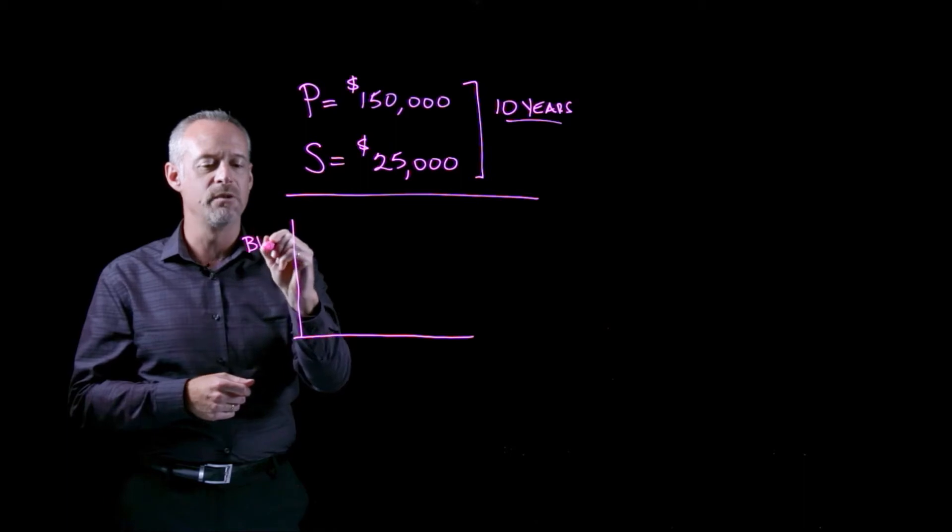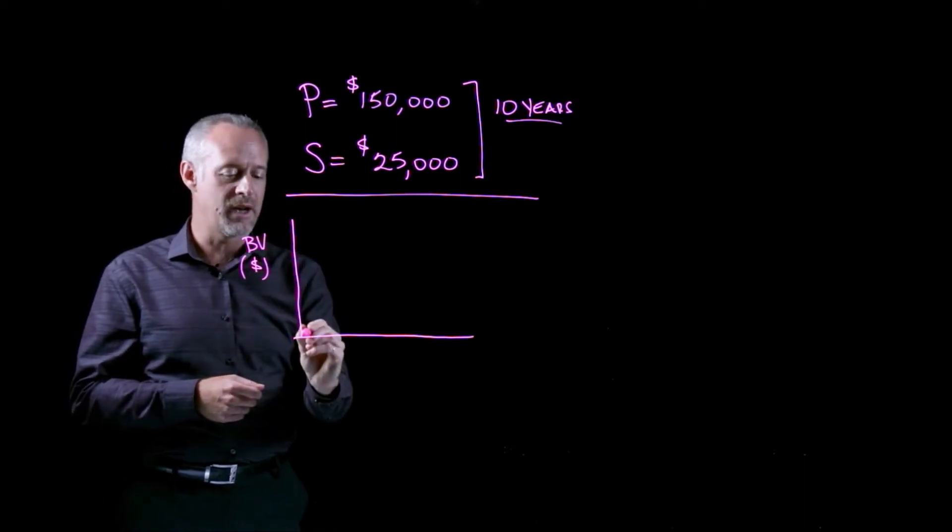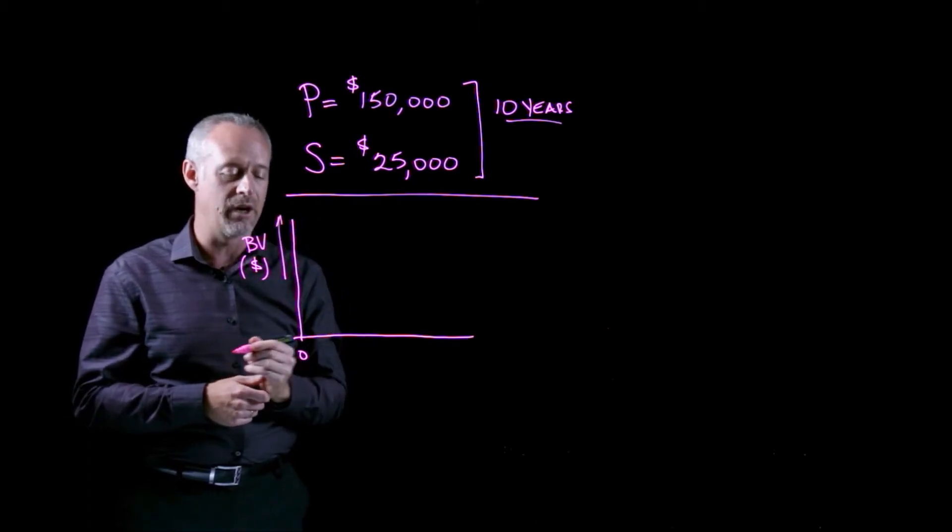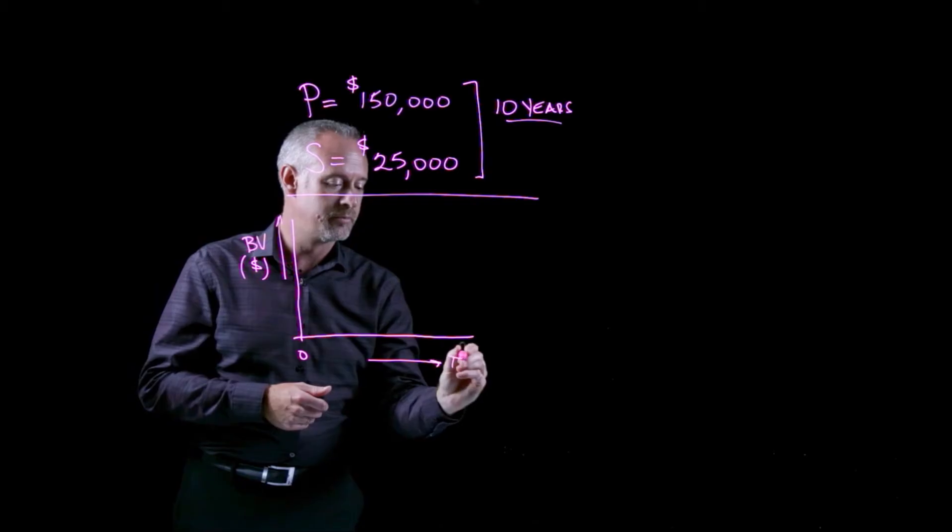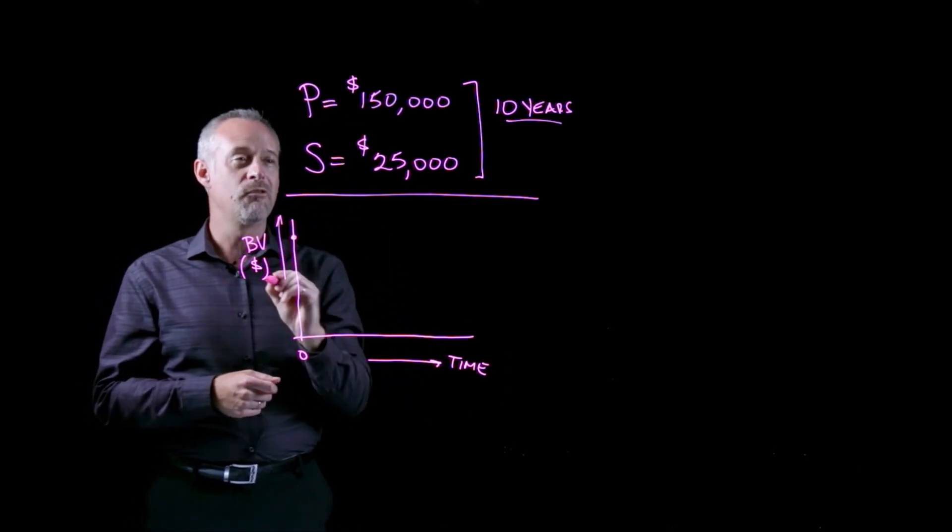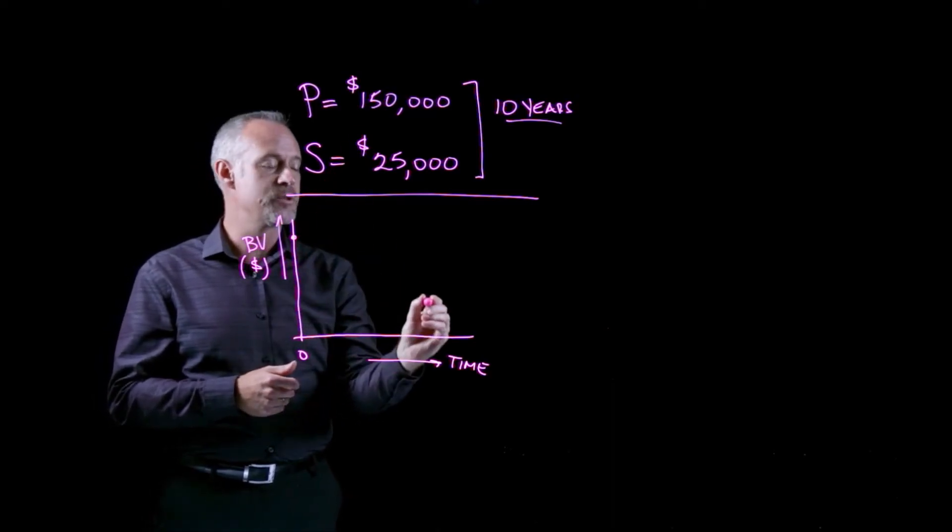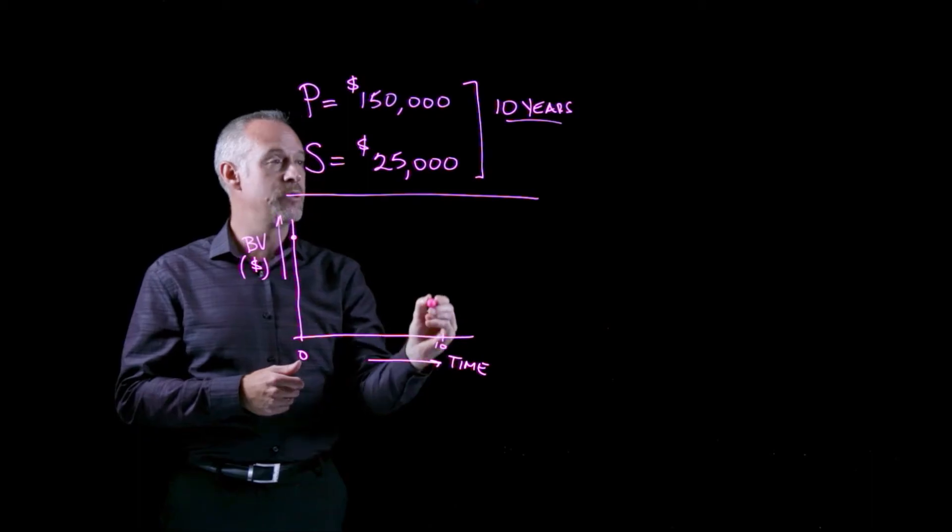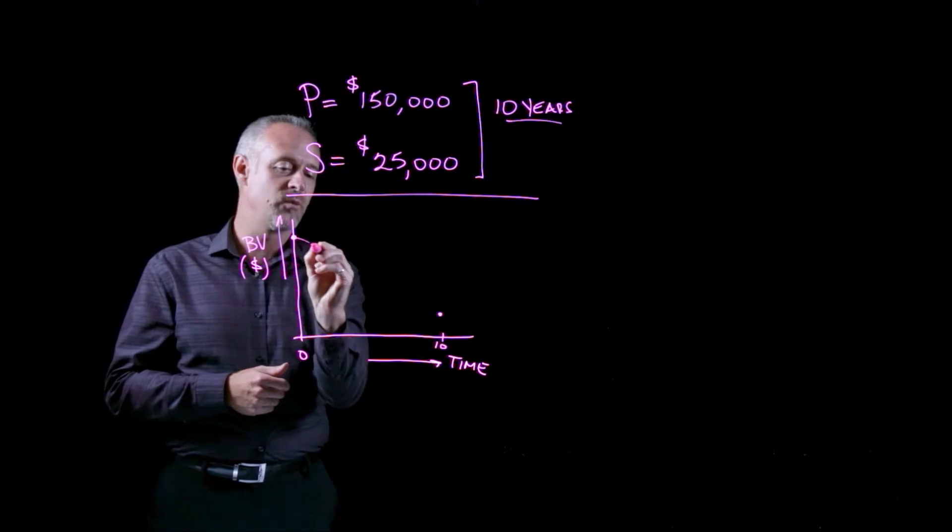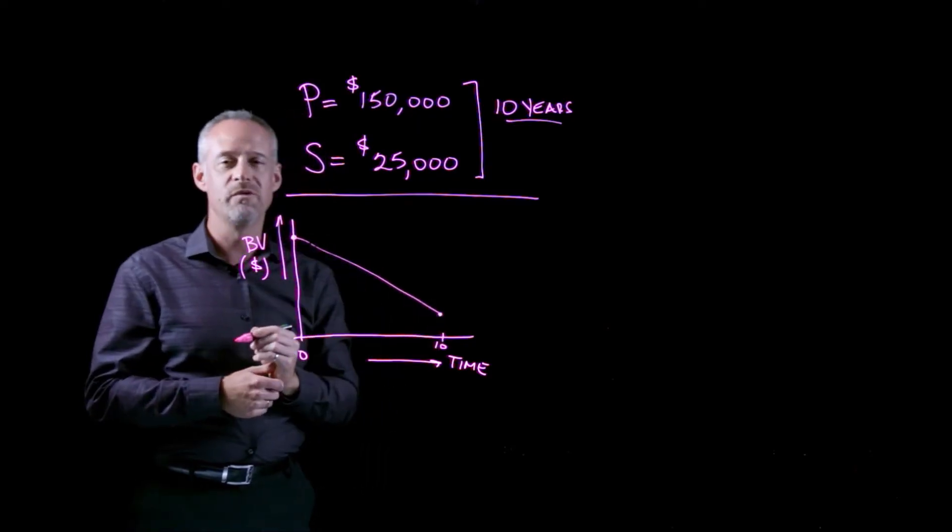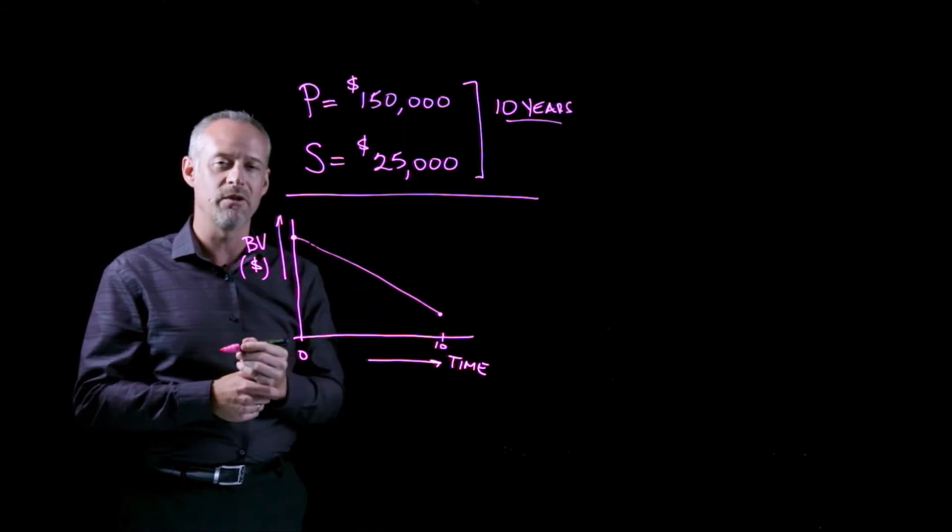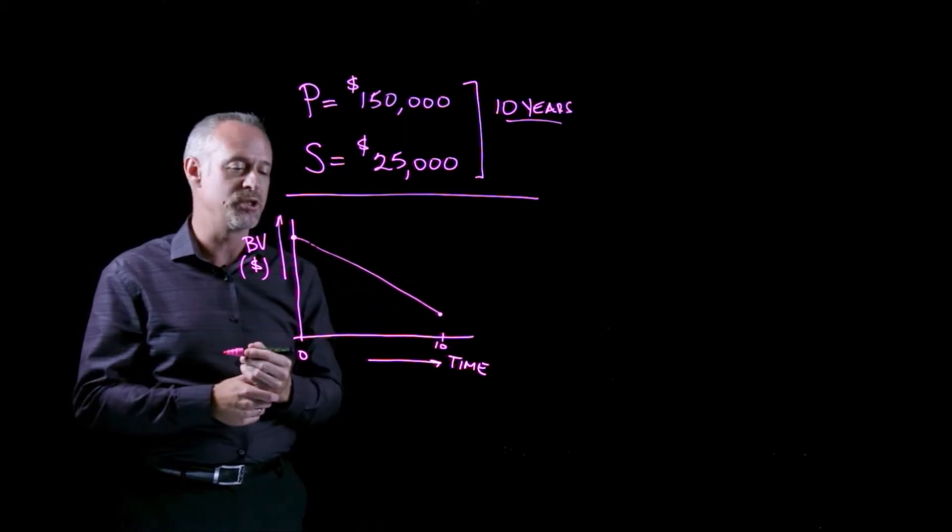So if I say my book value in dollars at time t equal to zero, where this axis is the asset's book value and this is time, we purchase the asset at time t equal to zero for a hundred and fifty thousand, and ten years later, we put a ten here, ten years later we have a value of twenty-five thousand. You can see that we lose value over time and a linear approximation of exactly how the value is lost is called straight-line depreciation.